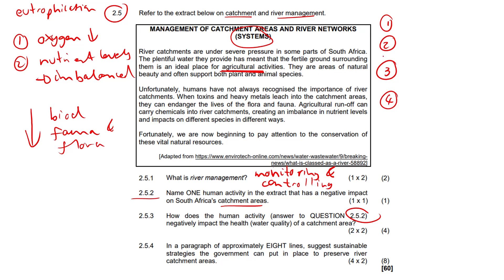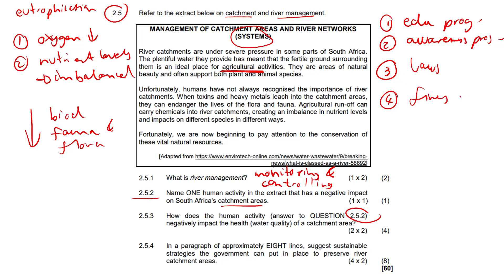Sustainable strategies the government can put in place: one, educate the public through educational programs and spread awareness. Two, implement legislation — laws — to create conservation zones and impose fines on anyone disobeying those laws. Other strategies include creating buffer zones, improving wastewater management, and encouraging afforestation. These are versatile answers you can use across varied sustainable strategy questions.